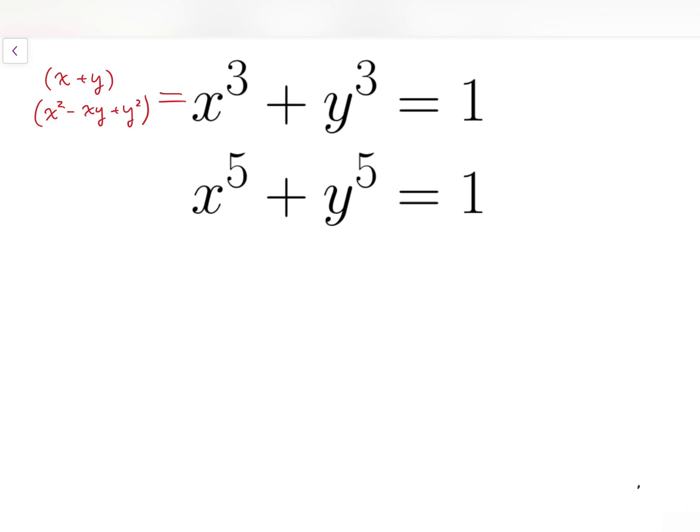While for sum of the power 5s, I can instead write that as sum of cubes times sum of squares. That will give two of the terms to be x to the power 5 plus y to the power 5, and I have two extra terms, so I subtract them, which are x cubed y squared and x squared y cubed.